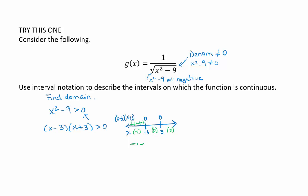Plugging in 0, we would get 0 minus 3 is negative, 0 plus 3 is positive, negative times positive is negative.